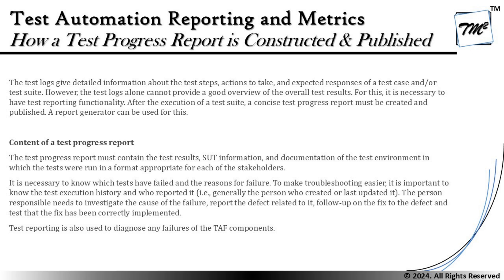It is necessary to know which tests have failed and the reason for the failure. To make troubleshooting easier, it is important to know the test execution history and who reported it. The person responsible needs to investigate the cause of the failure, report the defect related to it, follow up on the fix, and test that the fix has been correctly implemented. Test reporting is also used to diagnose any failure of the TAF components. As and when a defect is reported, it is important to get it tracked, get it resolved, and conduct retesting, which helps define the required amount of retesting and regression testing.